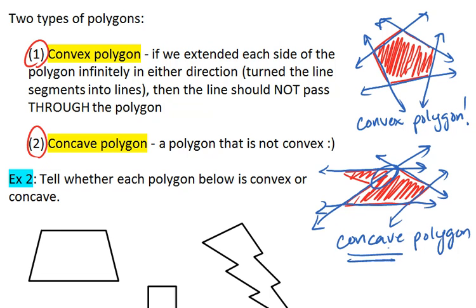One way to remember the difference in terms is to think how concave, it's caving in on itself. See how this angle right here is caving in on the polygon?